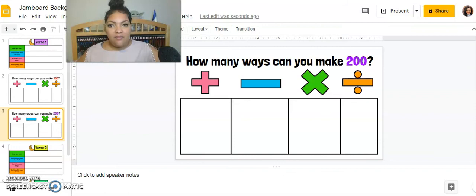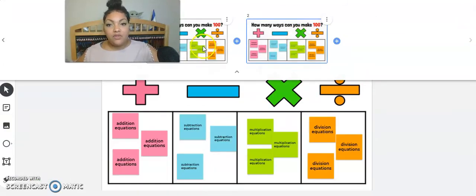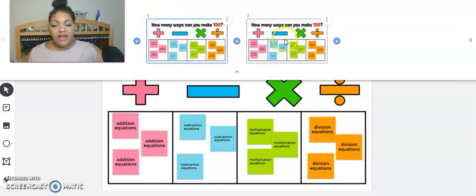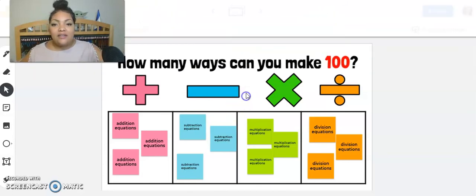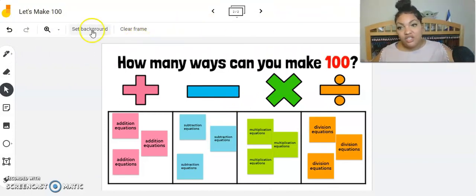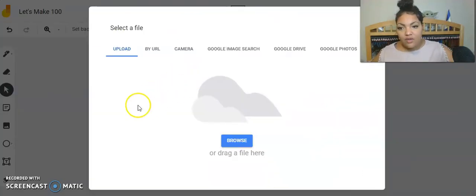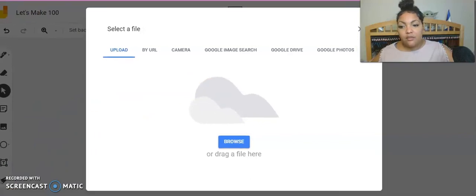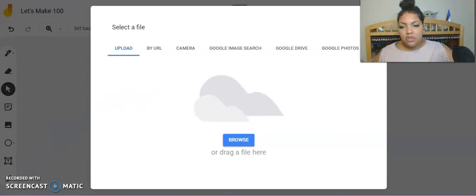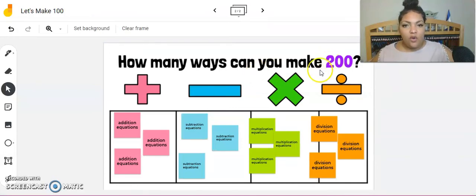Going back to my jam. Let's make 100. And you saw how I have my slide one and my slide two. Now I'm on slide two. And you guessed it, I'm going to change the background. So set background. Click here to have a new image. I'm going to drag and drop. Drag and drop that background. And here we go. How many ways can you make 200? And I didn't even need to change anything because you can still make equations to 200 using multiplication, division, subtraction, and addition.